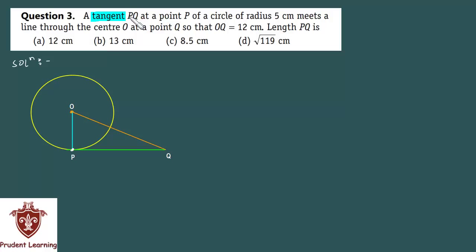A tangent PQ at a point P of a circle of radius 5 cm meets a line through the center O at a point Q so that OQ is equal to 12 cm. Length PQ is - this question has an associated figure.